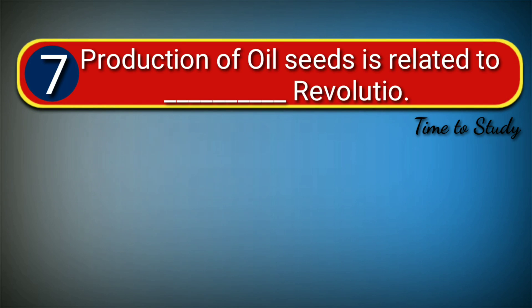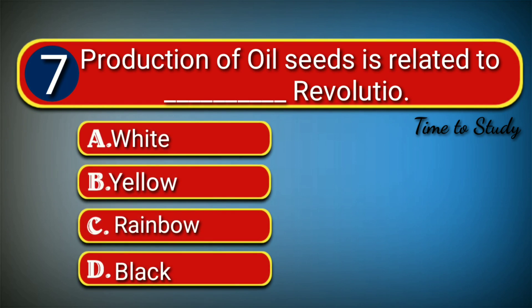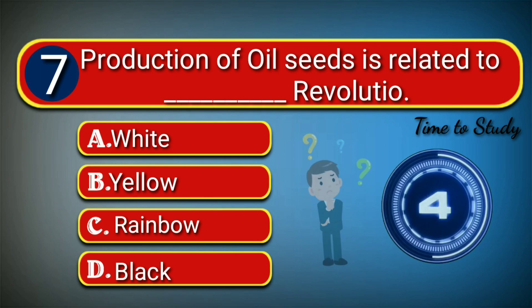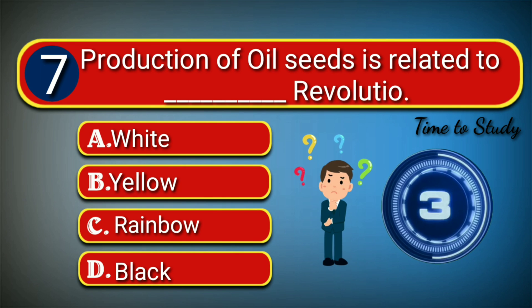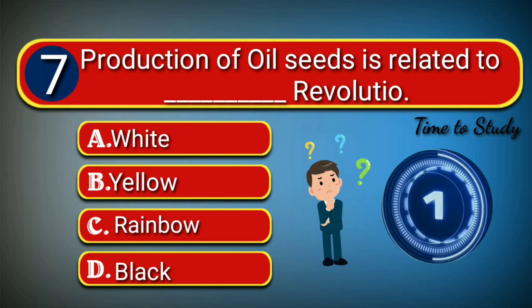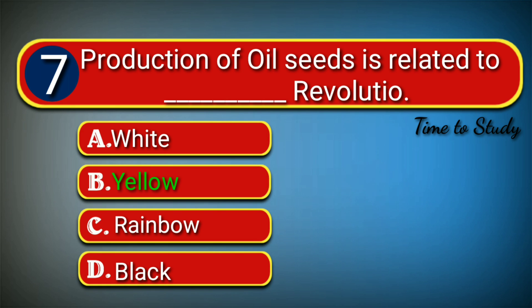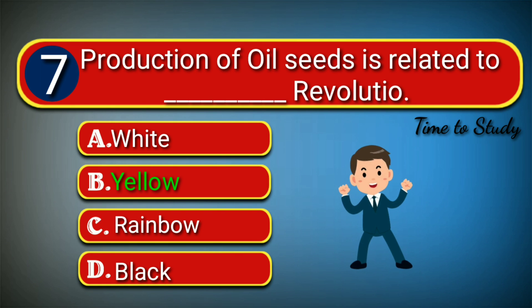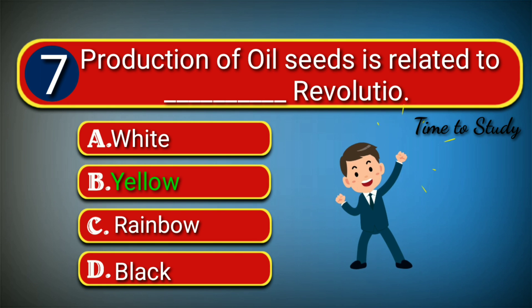Seventh question: Production of oil seeds is related to yellow revolution.